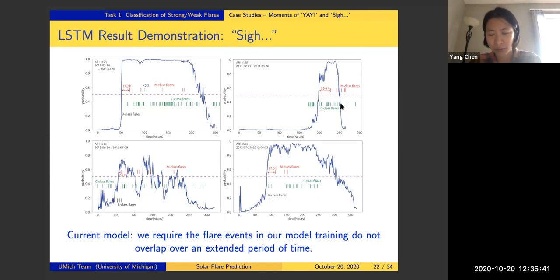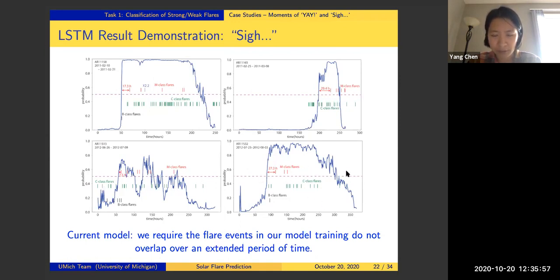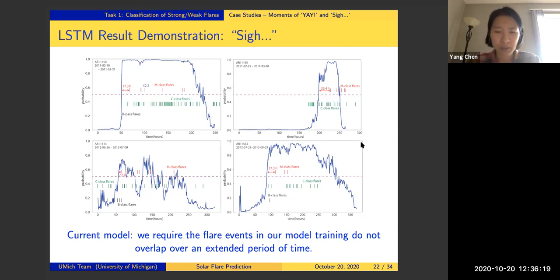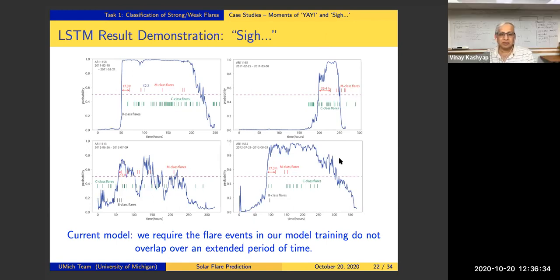However, for another active region our prediction score already dropped to almost zero a few hours before the last M-class flare happened — a bad result. For another active region, many hours after the last strong flare the prediction score drops to almost zero, which reveals problems in our data preprocessing and model training. We want to avoid these kinds of anomalous phenomena.